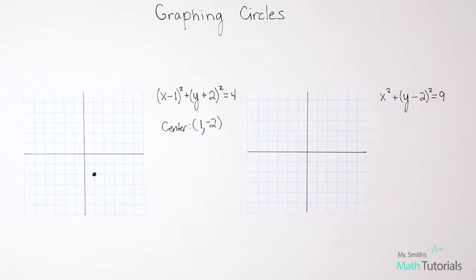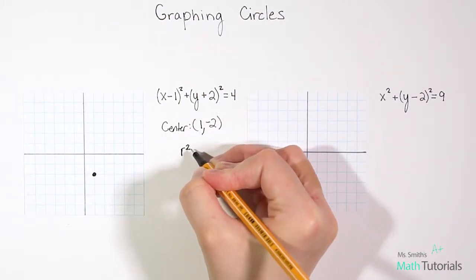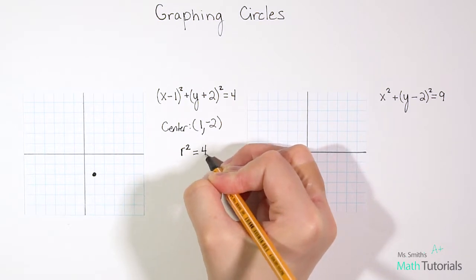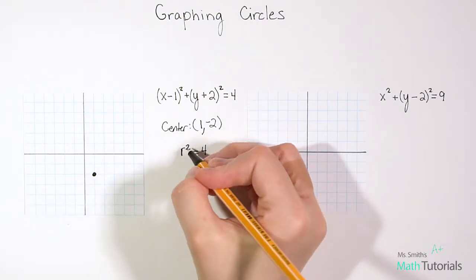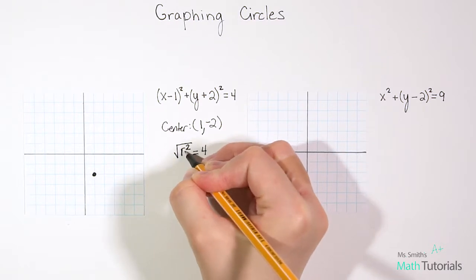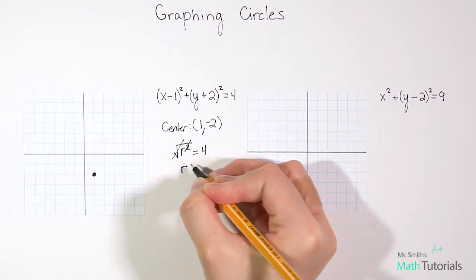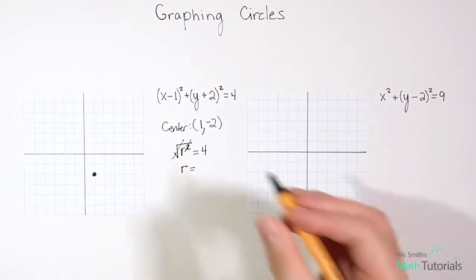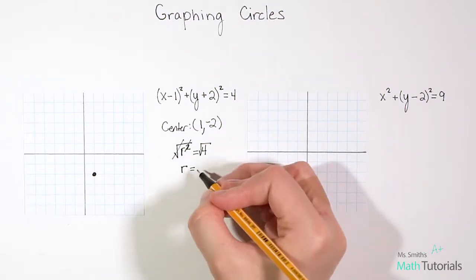Now how we graph the circle around that is we figure out what is the radius of the circle. Whatever this equals, so this equals 4. 4 is our radius squared. So if we know radius squared is 4, we just want to know plain old radius. So we can get rid of that square by taking the square root. That gets rid of the 2 and just leaves r. But if you take the square root of one side, you have to do so to the other. And the square root of 4 is 2.